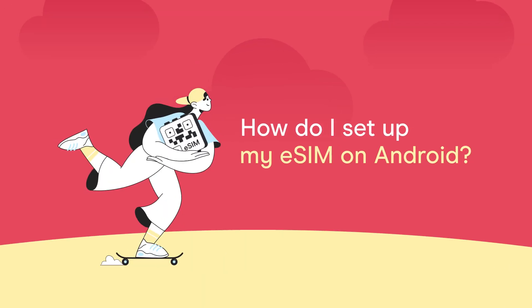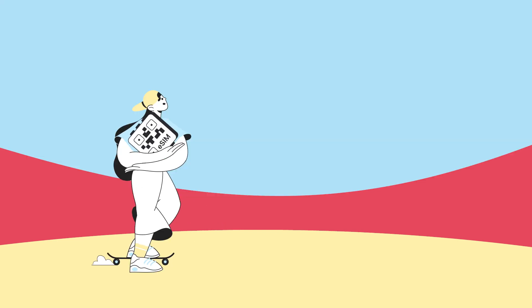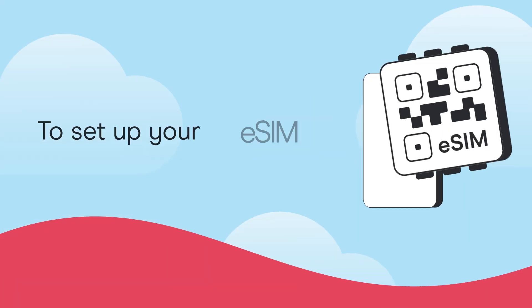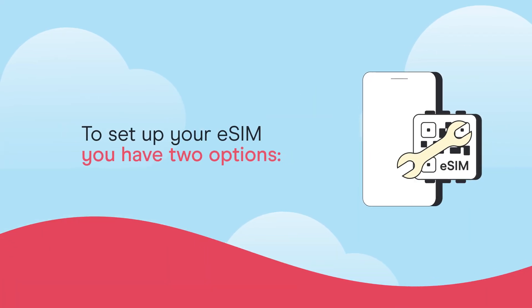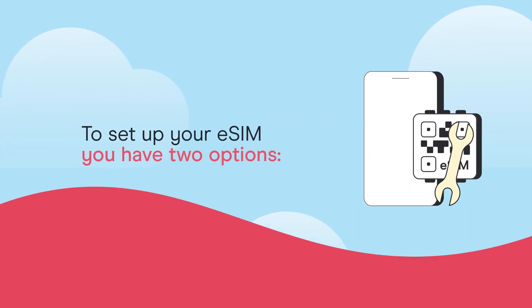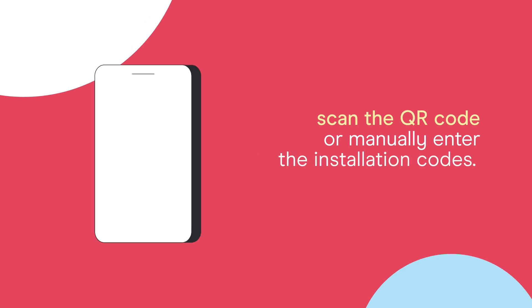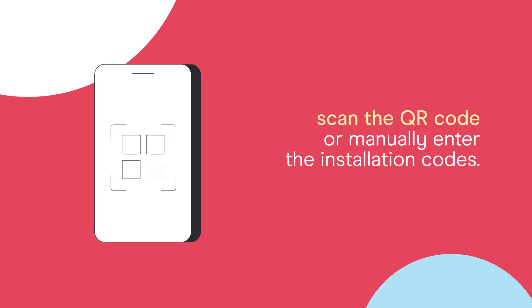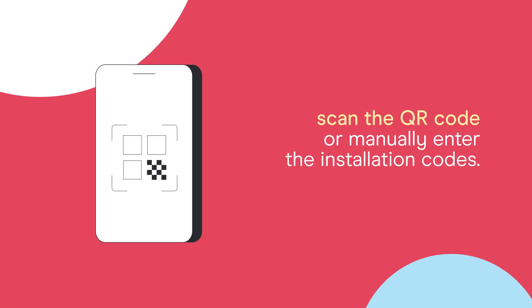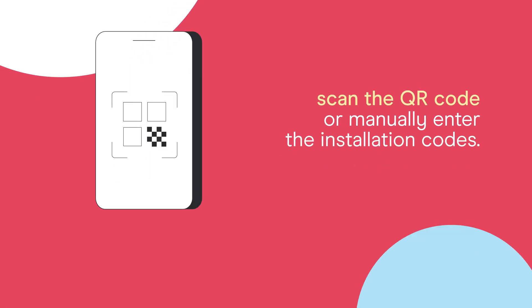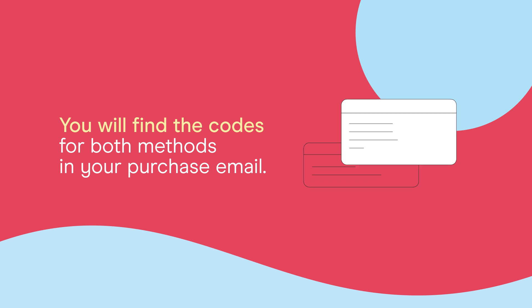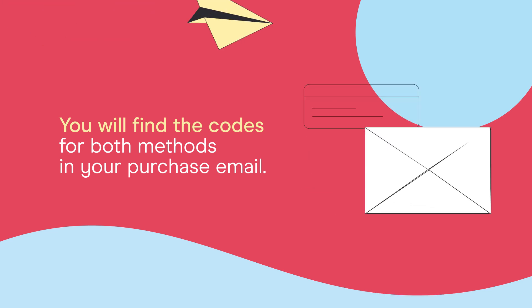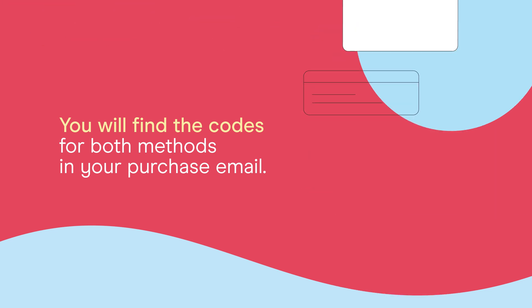How do I set up my eSIM on Android? To set up your eSIM, you have two options: scan the QR code or manually enter the installation codes. You will find the codes for both methods in your purchase email.